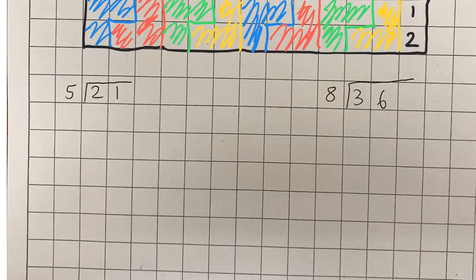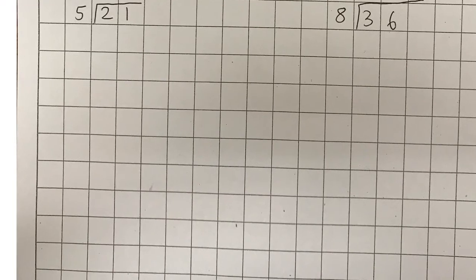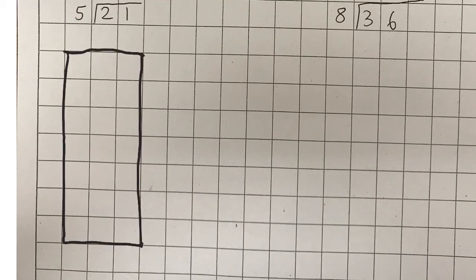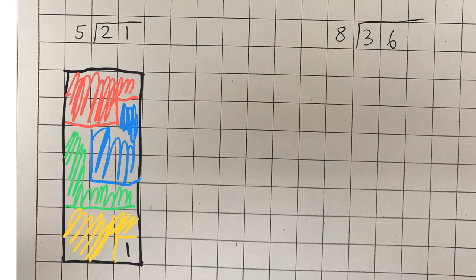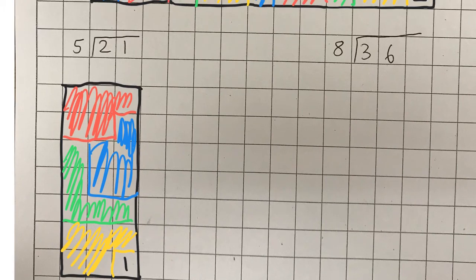We have a couple more examples. 21 divided by 5 — and 21 can be put into a rectangle. Can you think of what rectangle that would be? If you said 7 by 3, you would have been right. But again, it doesn't matter — you can make any shape you want as long as there are 21 boxes. Into groups of five, you can see here I have four groups with one remaining.